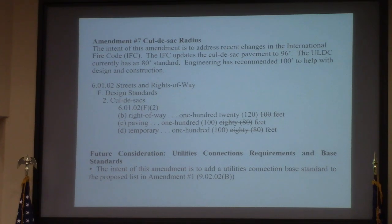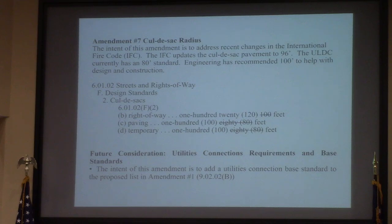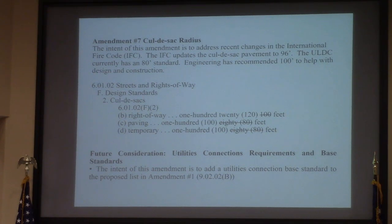Amendment 7 is the design standard adopted by the International Fire Code, making cul-de-sacs 96 feet. Currently the ULDC is at 80. Engineering has recommended 100 feet to help with overall design and construction. So if we get a go from 80 to 100 feet, this is how it would play out in the ULDC in Section 60102, primarily around the cul-de-sacs. There are the updated design distances.